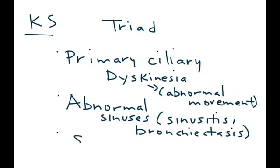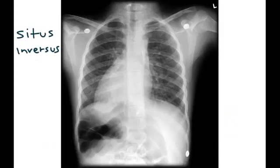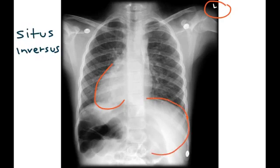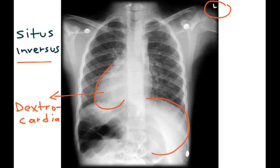The third part of the triad is a very interesting finding known as situs inversus. This is essentially a transposition — what is supposed to be on the left is now on the right, and what is on the right is now on the left. The heart being on the right side is given its own unique term: dextrocardia. When both the thoracic and abdominal organs are all reversed, that is situs inversus totalis.